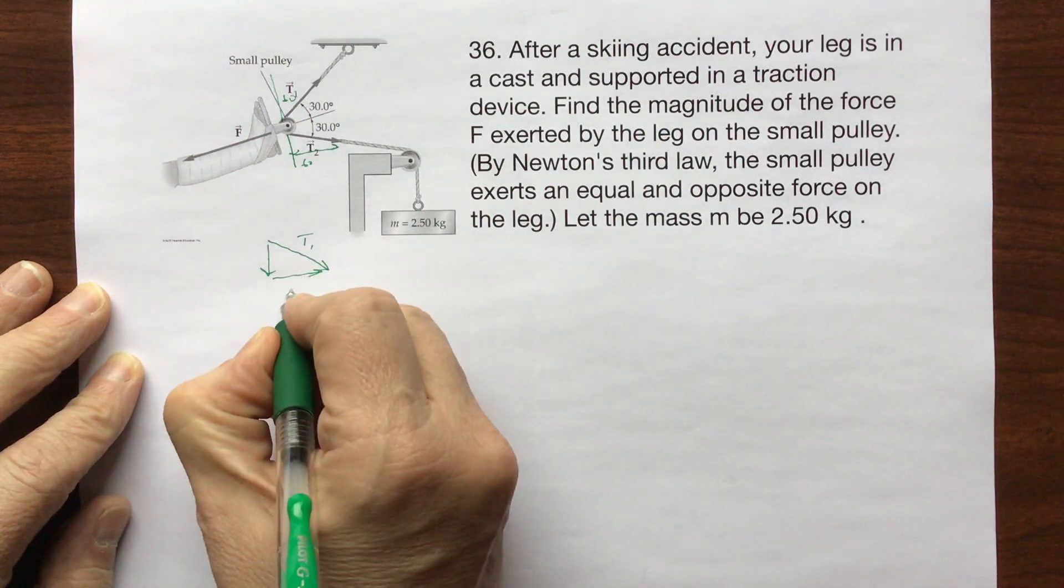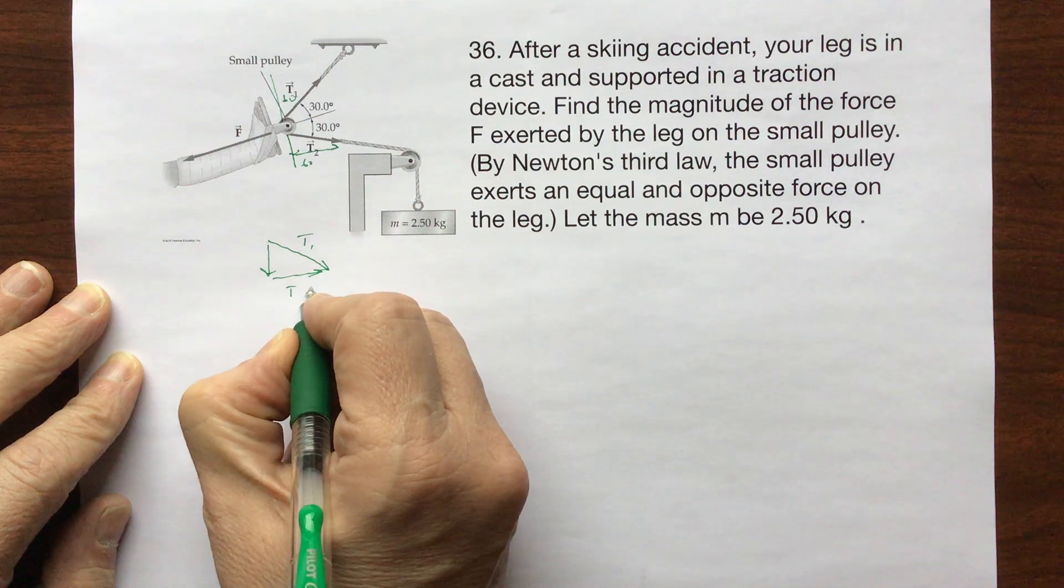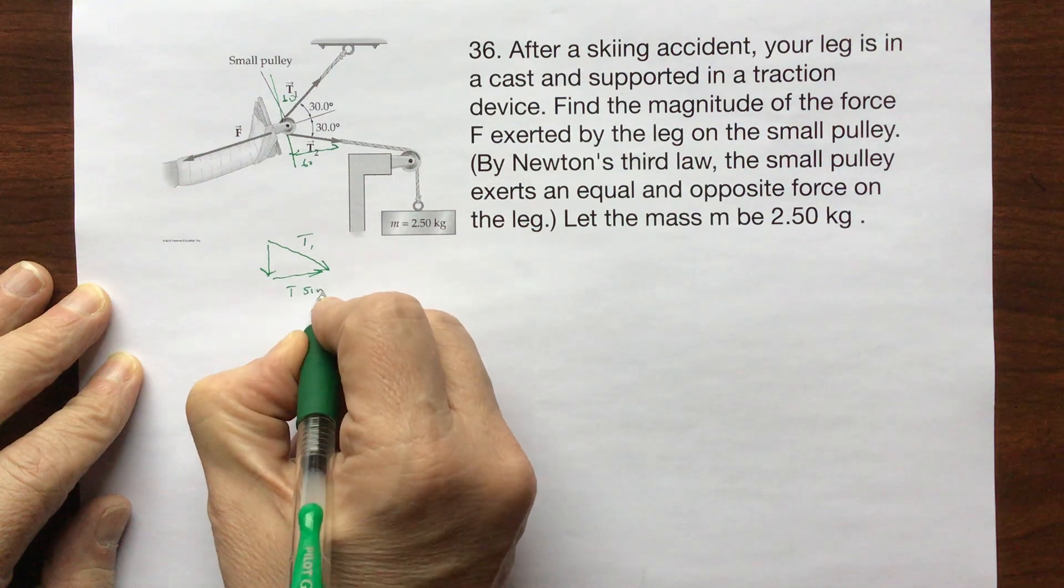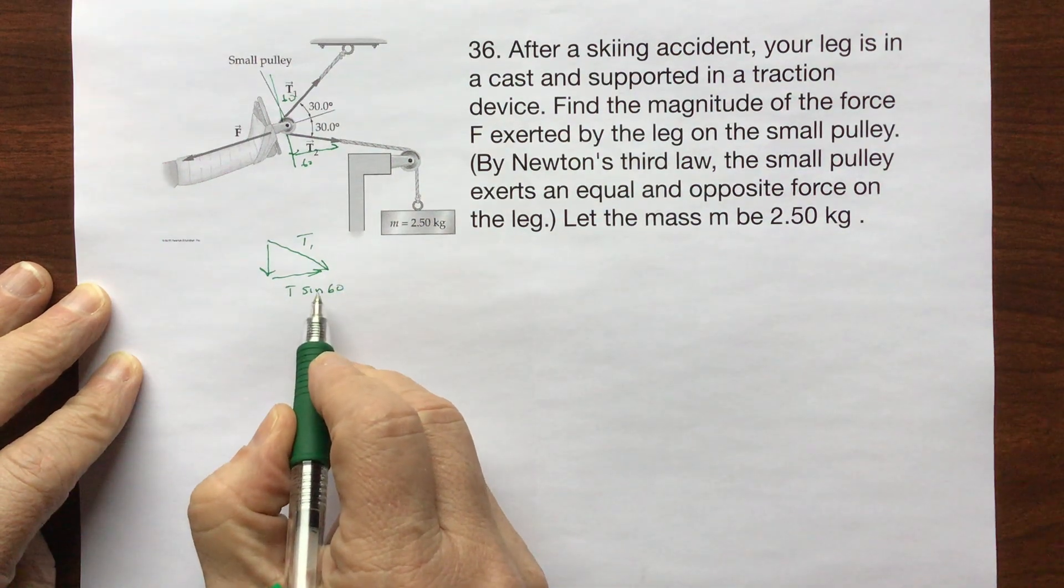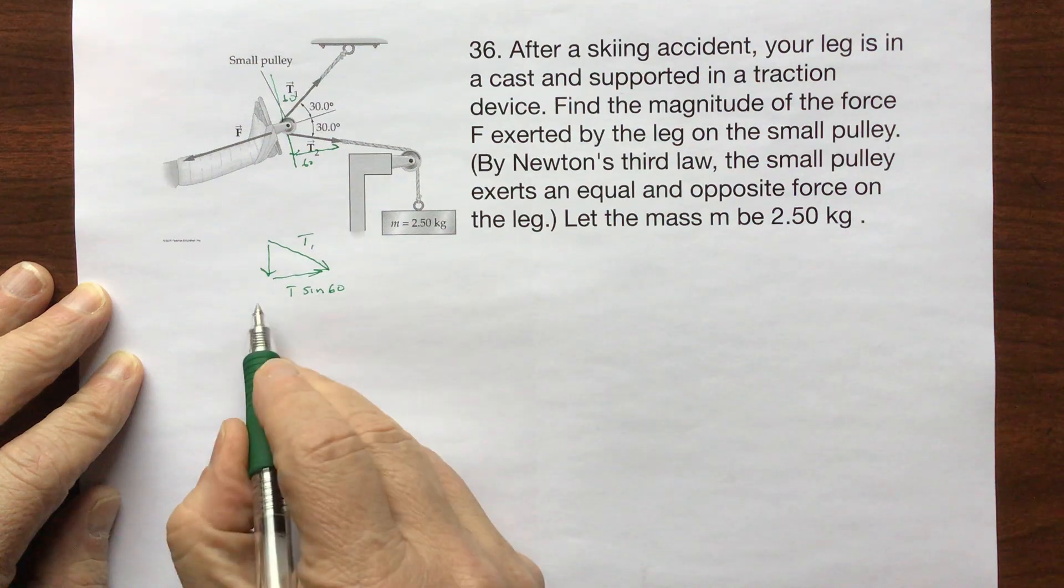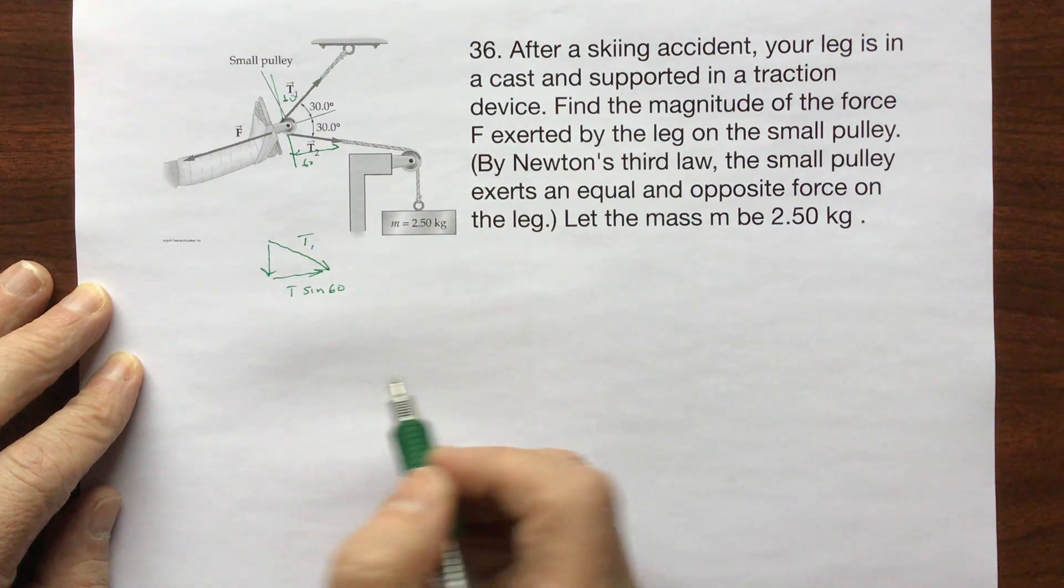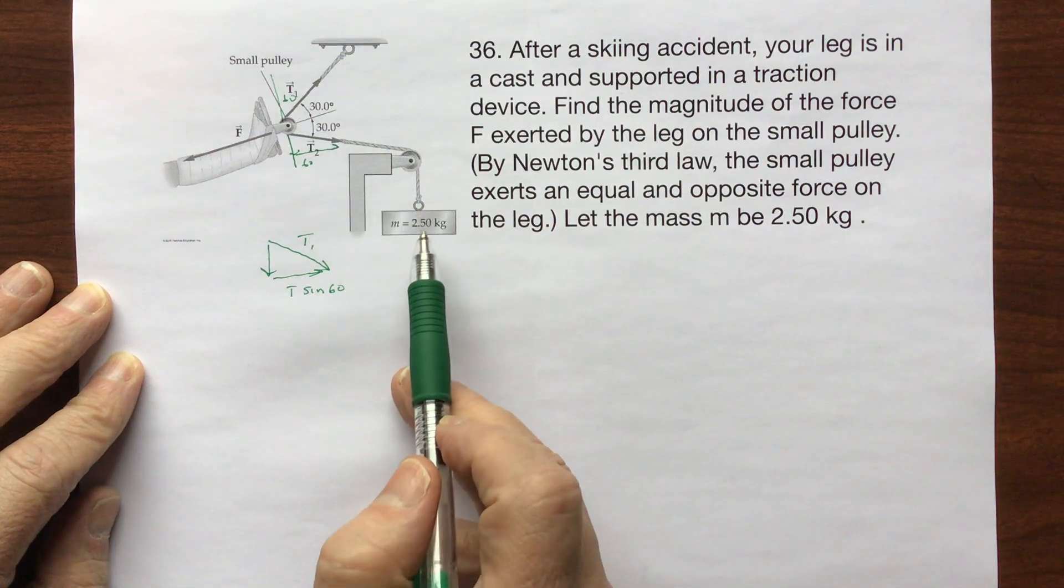That means that I want T times the sine of 60 to be here, and then I'm going to double it. So I want two times T times the sine of 60. Well, what is T?